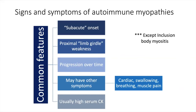How do these patients present? With the exception of inclusion body myositis, autoimmune myopathies often present with what we call subacute onset — not sudden like a stroke, but also not very chronic over many years like a muscular dystrophy. Usually it's on the order of weeks to months. Patients have what we call proximal limb girdle weakness — muscles that are big and close to your body, not at the extremities distally.